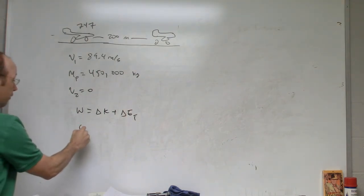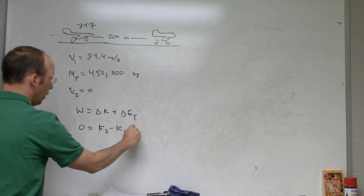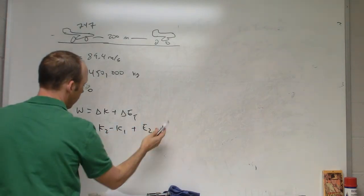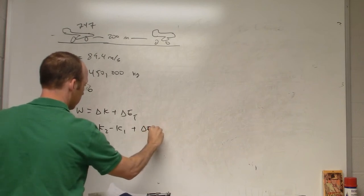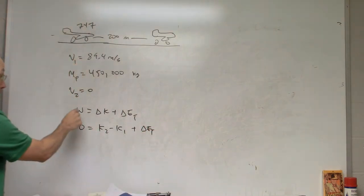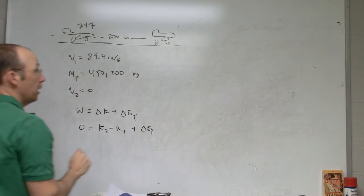And there's no forces doing work on the plane. So this is zero equals k2 minus k1 plus delta E thermal. So since I'm not doing any work, I don't really care about the distance. I just need the change in kinetic energy and use that to solve for the change in thermal energy.